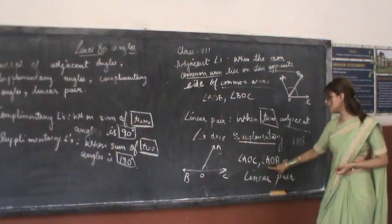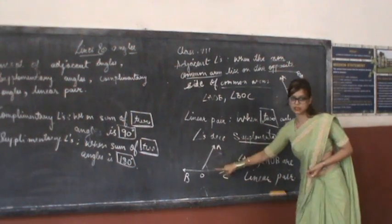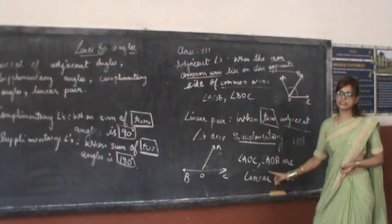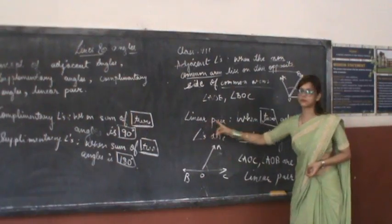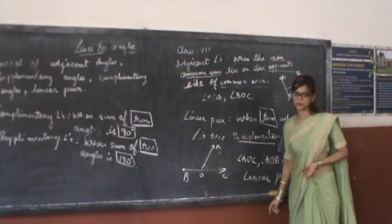So over here angle AOB plus angle AOC is equal to 180 degrees. Therefore this is the concept of linear pair. Thank you. Bye.